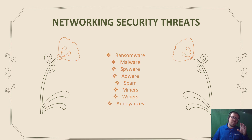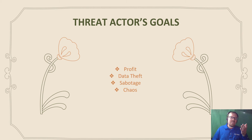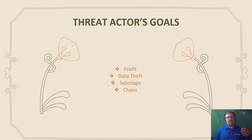So we have to ask ourselves: what is the threat actor's goal? Because that will help tell us what they might use. I divided this into four things — and once again these can overlap. We have threat actors who are in it for profit, those who do it for data theft, those who do it for sabotage, and those who do it for chaos, meaning they don't necessarily have a goal — they're just propagating malware or sending sweeps of everything they can. For example, somebody doing something for profit like ransomware could also do data theft for more profit at the same time.